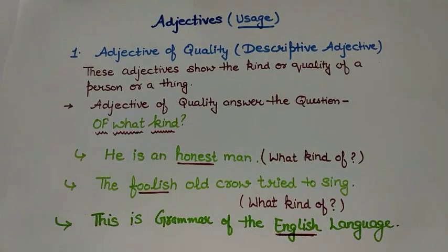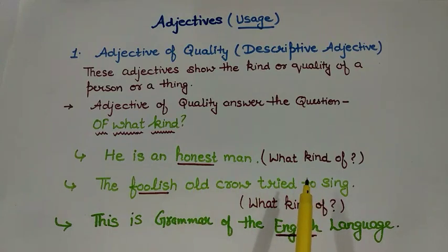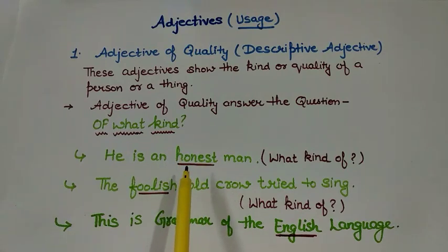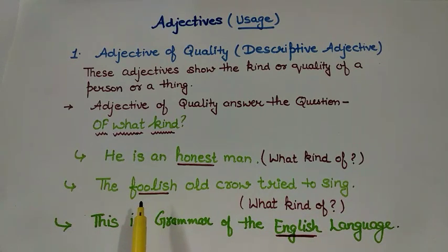The first one is adjective of quality. These adjectives show the kind or quality of a person or a thing. We can check by asking the question 'what kind.' Adjective of quality answers the question of what kind. Like, 'He is an honest man' — what kind of man is he? He is an honest man. So 'honest' is adjective of quality. 'The foolish old crow tried to sing' — what kind of crow? The foolish one. So 'foolish' is adjective of quality.